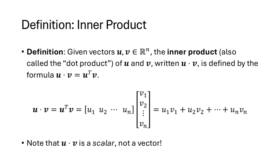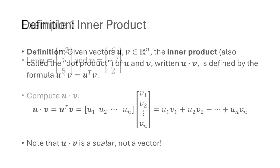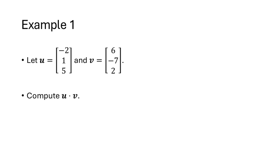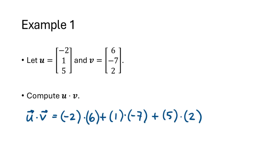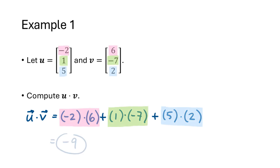What we're doing is taking the entries of u, multiplying them by the corresponding entries of v, and adding up the results. By the technical definition this gives a one-by-one matrix, but we consider u dot v to be a scalar. For example, if u is the vector (−2, 1, 5) and v is the vector (6, −7, 2), we match up the entries, multiply them together, and add up the results, giving us −9.